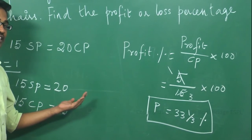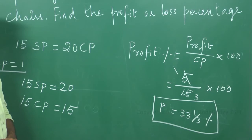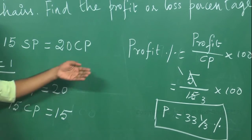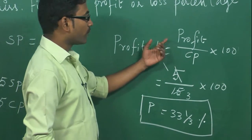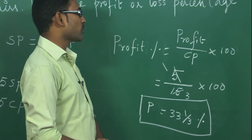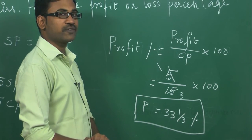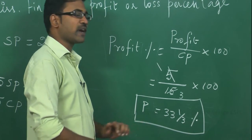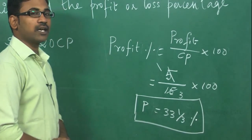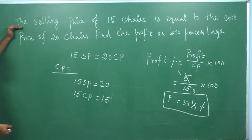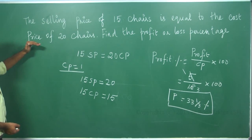Since selling price is more than cost price, there is a profit. Profit percentage = (SP − CP) / CP × 100 = (20 − 15) / 15 × 100 = 5/15 × 100 = 33⅓%. Therefore, in the transaction where the selling price of 15 chairs equals the cost price of 20 chairs, the profit percentage is 33⅓%.